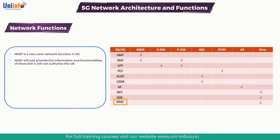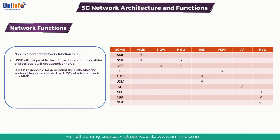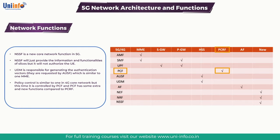At this point, NSSF will provide the information and functionalities of slices, but it will not authorize the UE — AMF will be responsible for authorizing UE depending on the subscription information from UDM. UDM is responsible for generating authentication vectors, requested by AUSF, similar to MME. It does this using subscriber profiles stored in UDR. UDR is like a database to store subscriber information, application-specific data, and policy data. Policy control is similar to 4G core network but is now controlled by PCF, which has extra and new functions compared to PCRF in 4G.